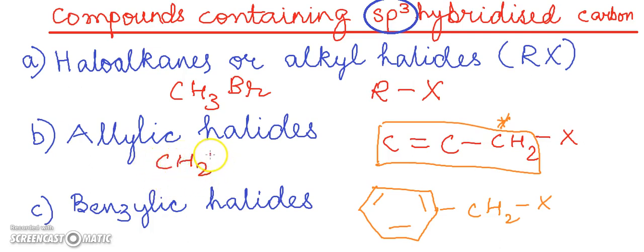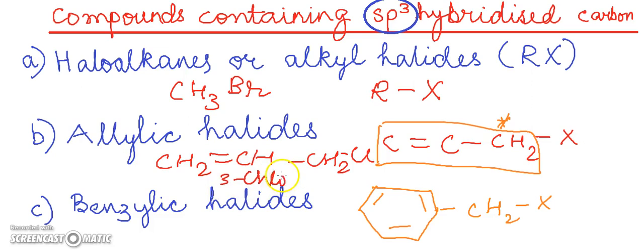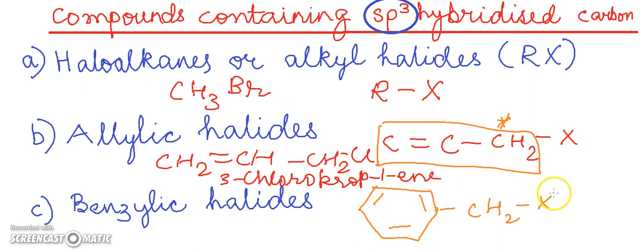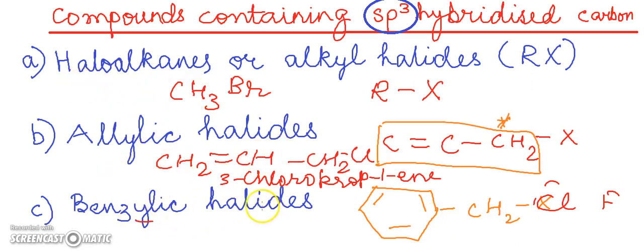The structure of 3-chloropropene is CH2=CH-CH2Cl. For the benzylic halides, a general example is benzyl halide, where X is the halogen — it could be Cl, making it benzyl chloride, or fluorine, making it fluorophenylmethane. So we have haloalkanes, alkyl halides, allylic halides, and benzylic halides under the classification of compounds containing sp3 hybridized carbon atoms.